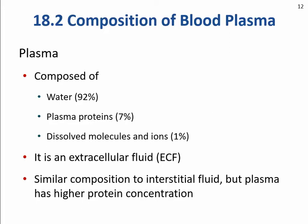The dissolved ions include sodium, potassium, magnesium, calcium, bicarbonate — things like that. There's lots of them but they don't weigh very much. There are also dissolved nutrients such as amino acids, glucose, various fats, phospholipids, and nucleic acids. Seven percent is made up of plasma proteins, and these plasma proteins are integral to the composition of plasma and how it works.